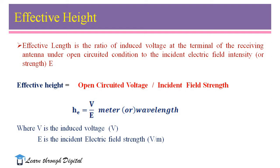The effective height He is the ratio of V to E, where V is the induced voltage and E is the electric field intensity. Depending upon the electric field intensity incident on the antenna, it develops the voltage across the antenna terminals. From this, we can identify the effectiveness of an antenna in transmitting and receiving mode. The unit for effective height is meters or in wavelength. The unit for induced voltage is volts, and the unit for electric field intensity is volts per meter.